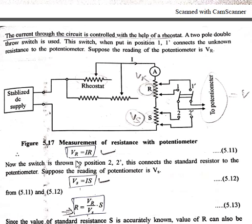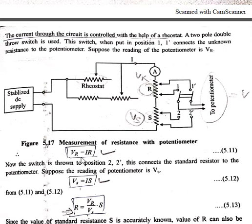VR gives us IR — the voltage across the unknown resistance R. When we throw the switch to position two and two dash, we get VS equals IS. Here I is constant because we have controlled the current through the rheostat, so the current term I is kept constant.